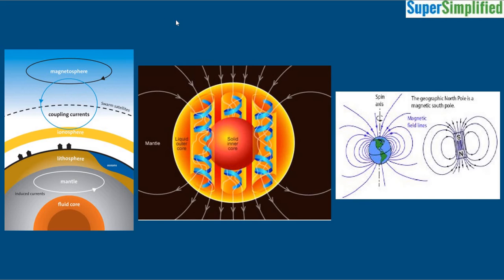Here we are talking about the magnetic field of Earth. The layers of Earth — the first layer is crust, then the second layer is mantle, and then there is the core.